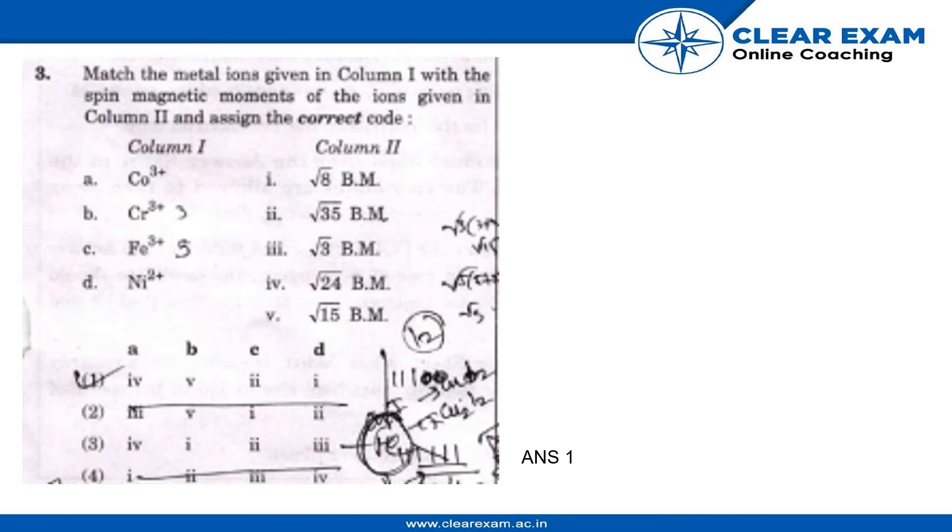The formula of magnetic moment is μ equals root n times (n plus 2). In order to calculate this, we have to know the value of n.